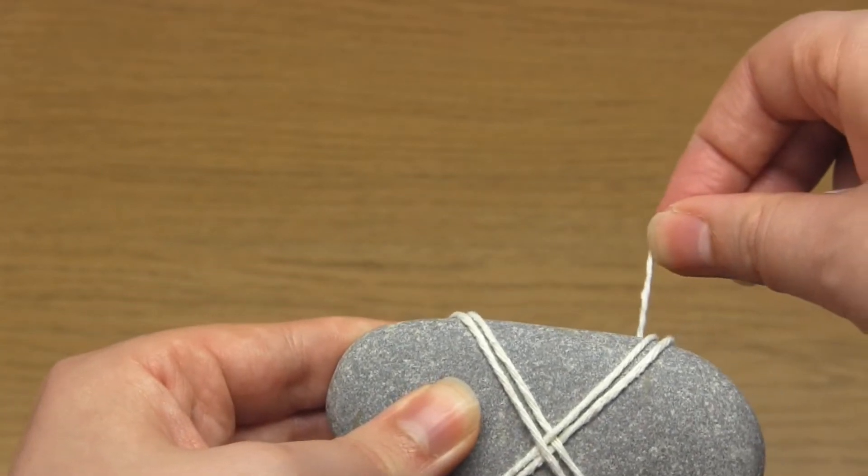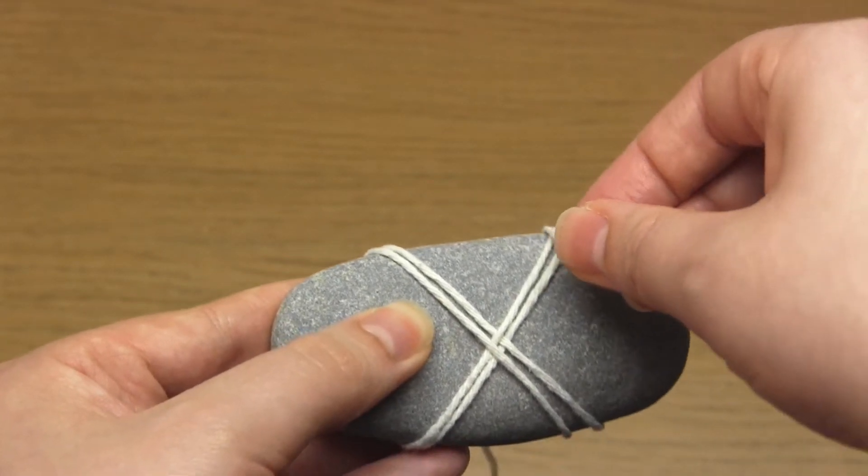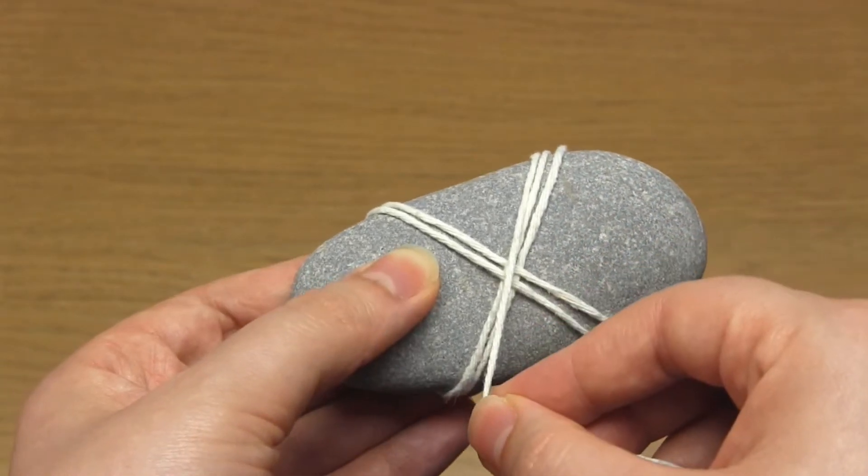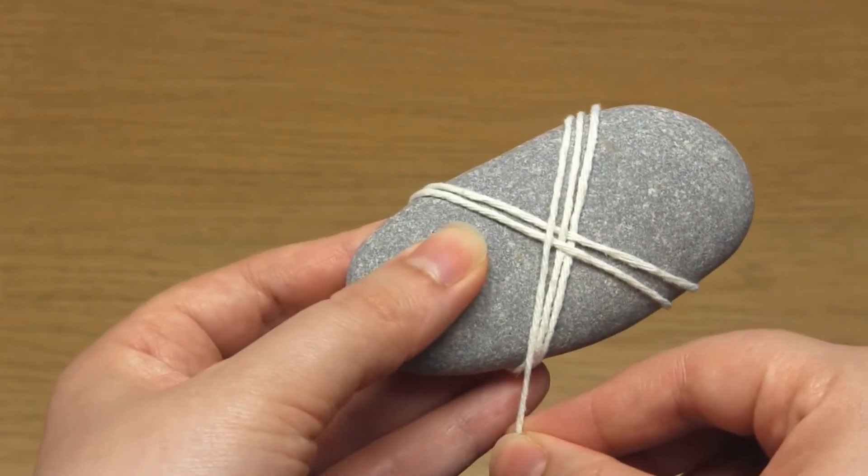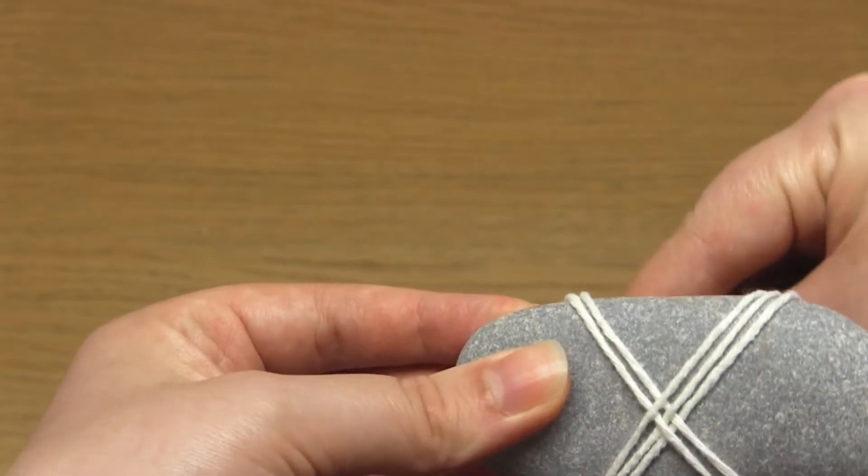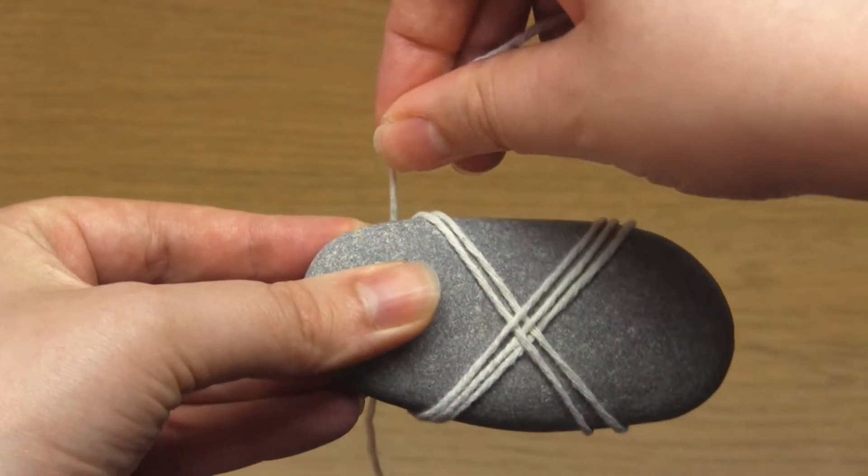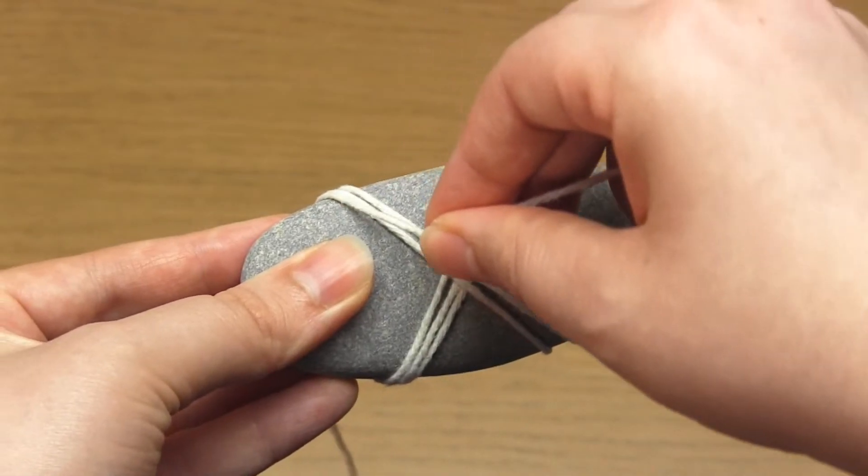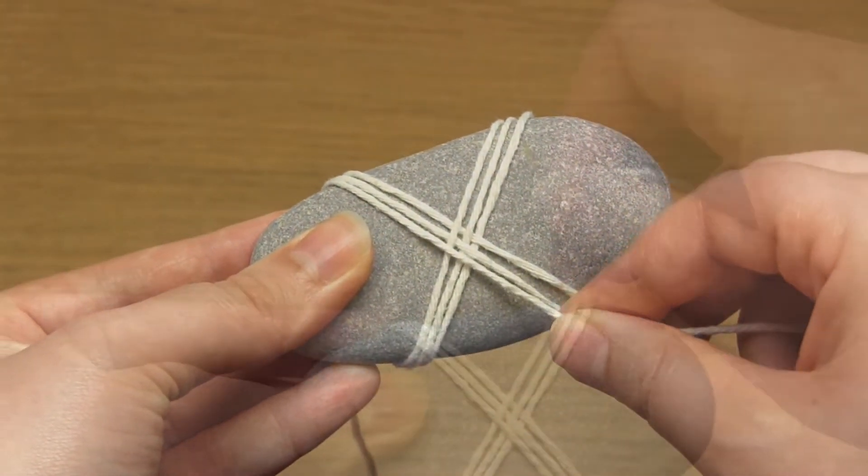So take the yarn diagonally over the front, going inside the first V and outside the second V. Then take the yarn under the pebble and then across the front again. This time going outside the first V and inside the second V.